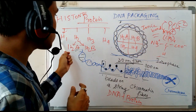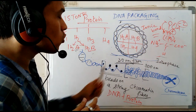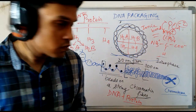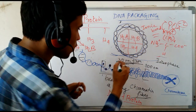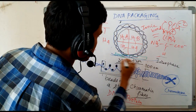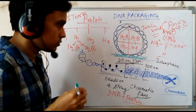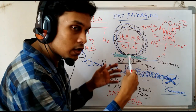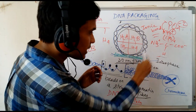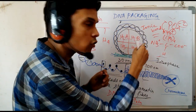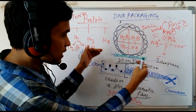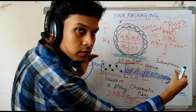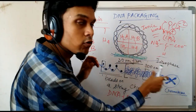So what is the function of histone 1? Histone 1 is not part of the core protein and is not part of the nucleosome. Histone 1 is present outside the core part, and it actually holds the incoming and outgoing DNA from the nucleosome, acting as a clip so that the DNA cannot get separated.